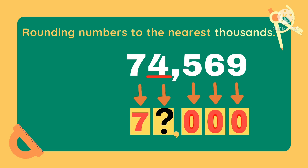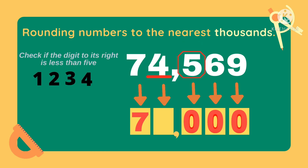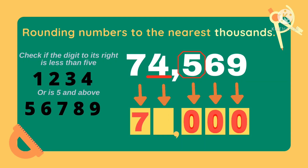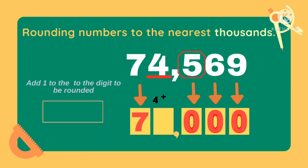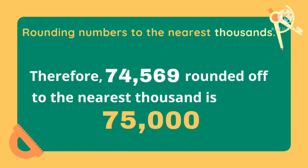Now, how about the digit that we need to round off? We can keep the digit the same or we can increase it by 1. To determine this, we need to check if the next digit to the right is less than 5 — those are 1, 2, 3, and 4 — or if it is exactly 5 and above — those are 5, 6, 7, 8, and 9. Since the digit is 5, we need to add 1 to the thousands digit. So 4 plus 1 is 5. Therefore, 74,569 rounded off to the nearest thousand is 75,000.